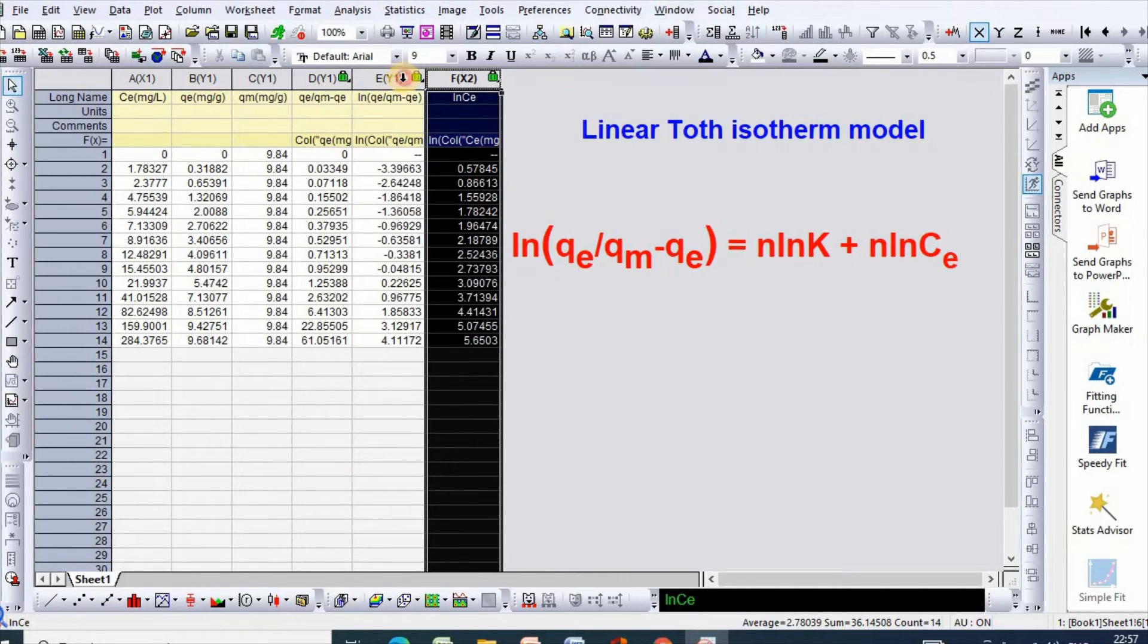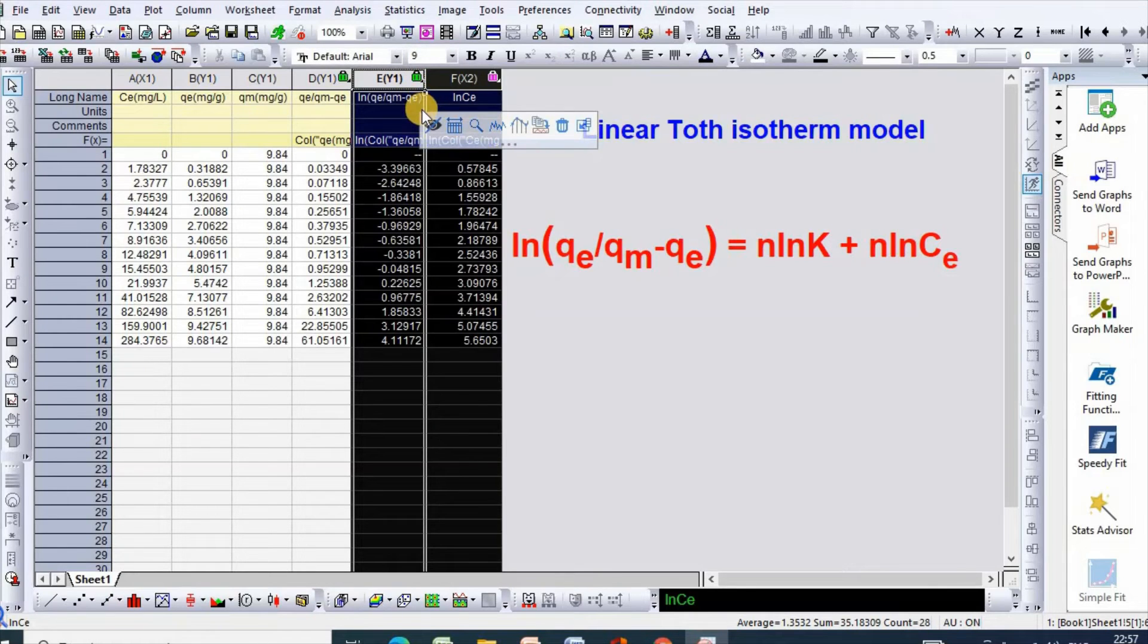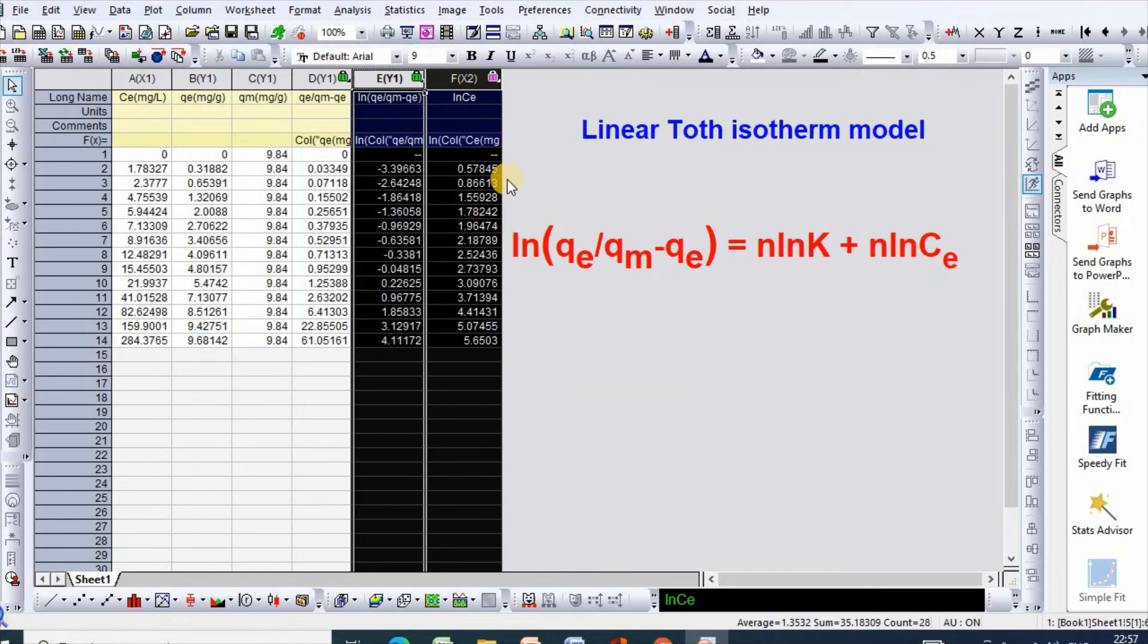Then, select these two columns and go to plot, then scatter.